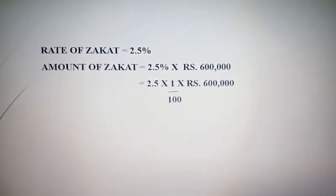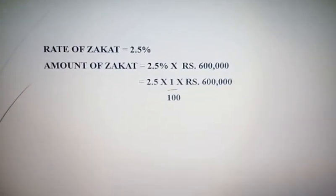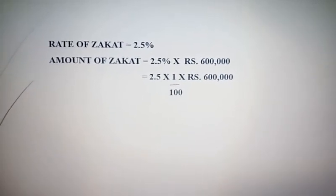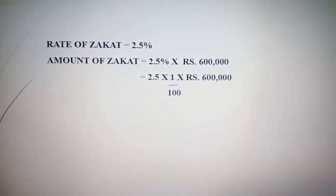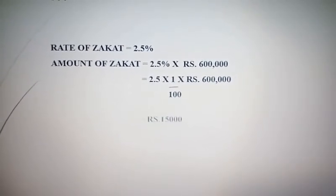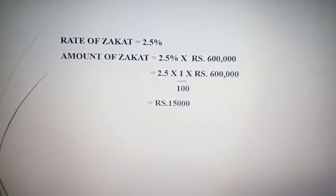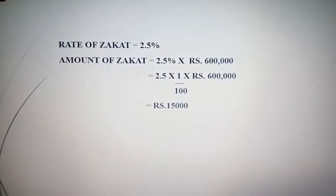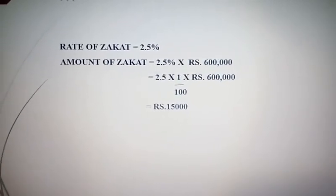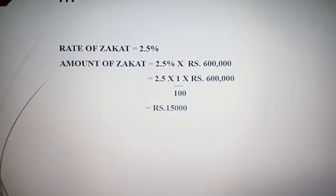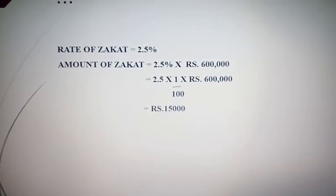Amount of Zakat = 2.5% of rupees 600,000. تو ہم 2.5 × (1/100) × 600,000 کریں گے۔ After solving, you get the answer rupees 15,000. So the Zakat on 600,000 is rupees 15,000.